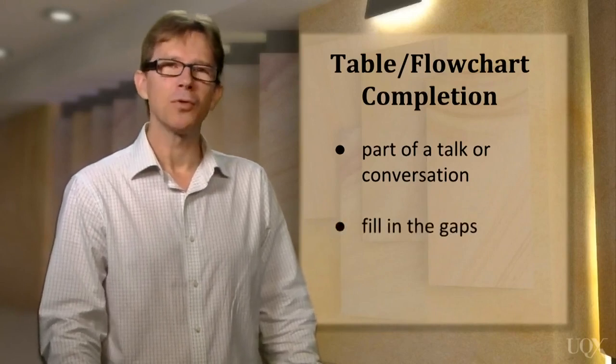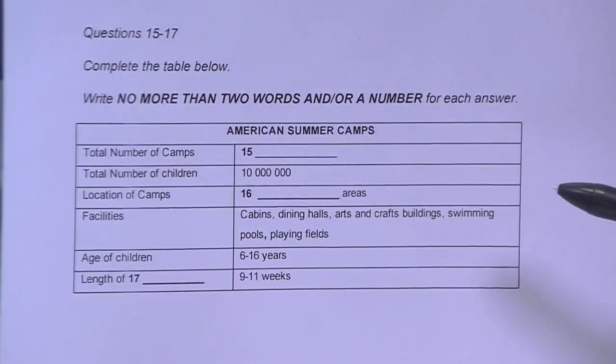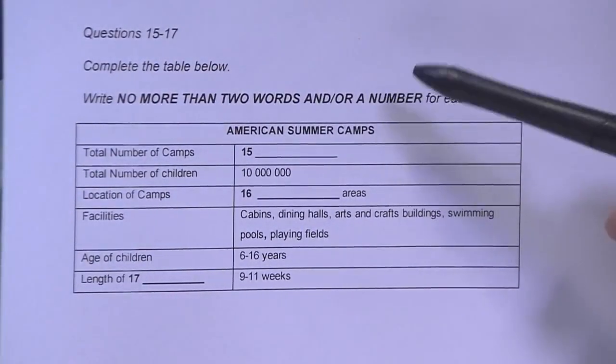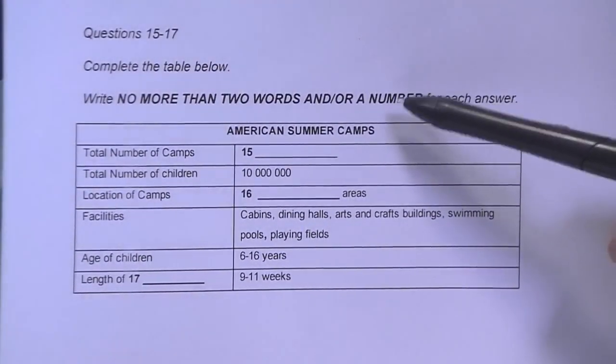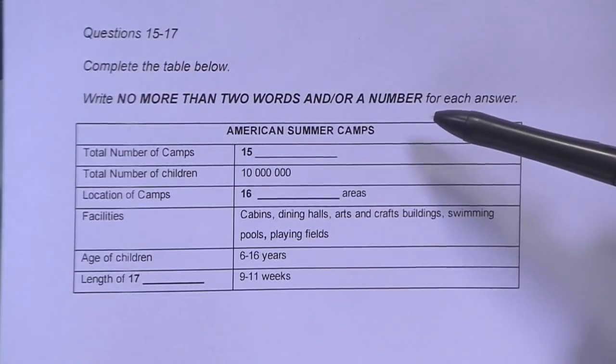Let's have a look at an example. This is what a table completion task looks like. The instructions here will tell you how many words or numbers you need to write, just like in some of the other IELTS question types.